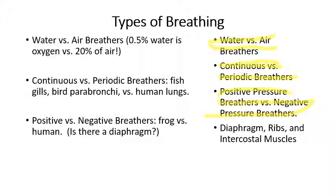A perfect example of a positive pressure breather would be a frog. If you've ever seen a frog breathe, they take a mouthful of air and push it into their lungs. If you look at frog lungs — in the laboratory we dissect some frogs so you can see the lungs inside — those frog lungs do not have ribs around the outside, because part of the function of ribs is to increase the size of the lungs in order to suck air in.